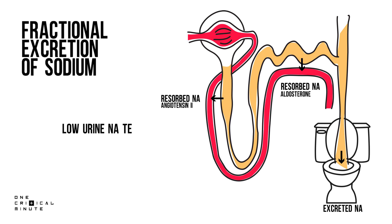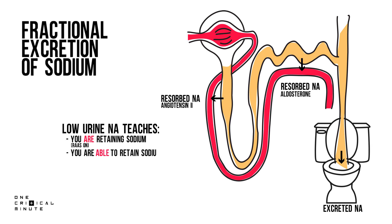Low urine sodium teaches you two things. First, your kidneys are currently retaining sodium — this means your RAS system is switched on, which indicates a decrease in effective circulating volume like hypovolemia, heart failure, etc., or renal artery stenosis. In renal insufficiency, this teaches you that the cause is pre-renal. Second, your kidneys are actually able to retain sodium, so your tubules are still functioning. In renal insufficiency, this teaches you that the cause is pre-renal and not renal or post-renal.